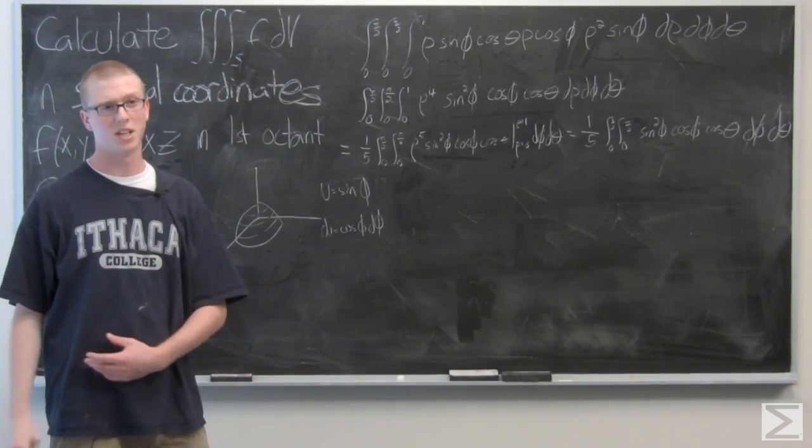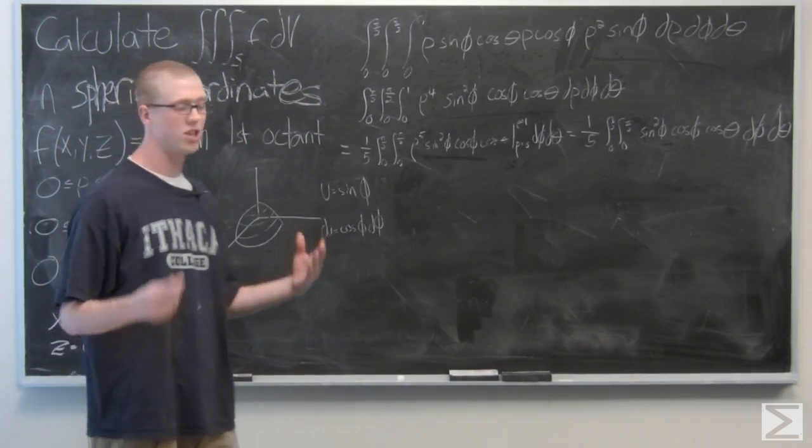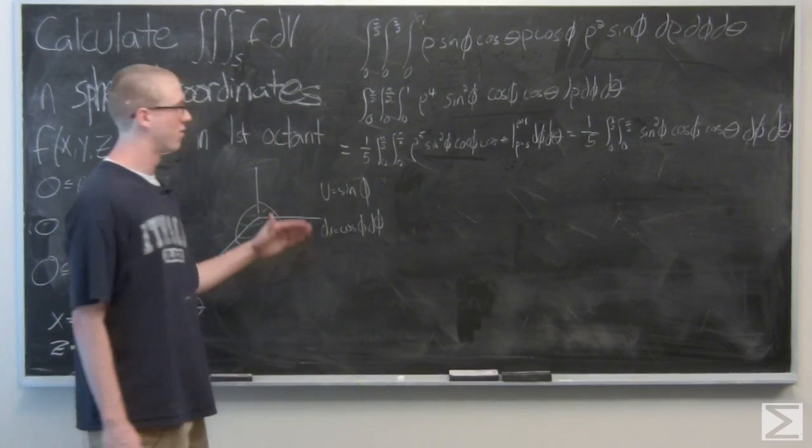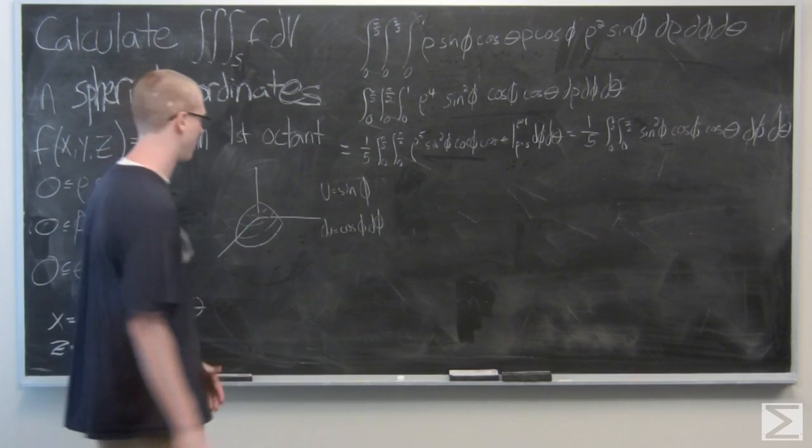And the last thing we need to do when making U substitution is change up our bounds a little bit. Upper bound is going to be sine of pi over 2, lower bound sine of 0.